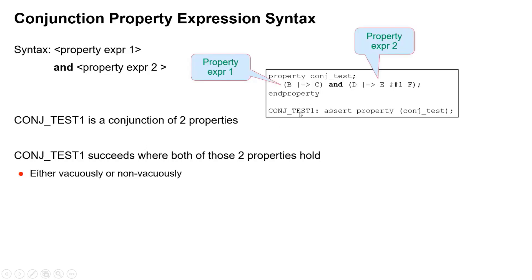So that overall property, the one we've created, succeeds when both of the properties hold, either vacuously or non-vacuously. So remember for any property with implication it passes under two circumstances. If we take the property expression B implies next cycle C, so if B occurs and C occurs next cycle that's a pass. If B is false that's a pass as well, a vacuous pass.